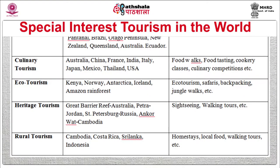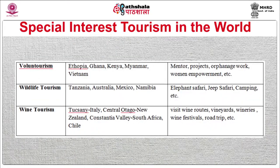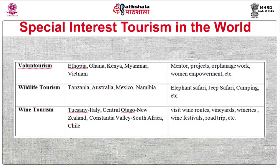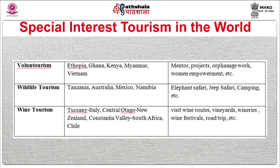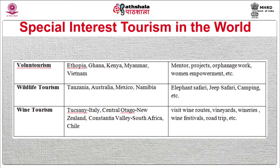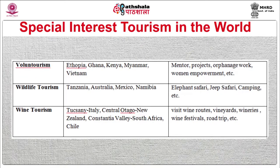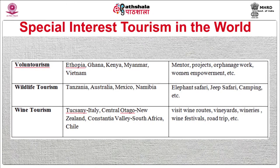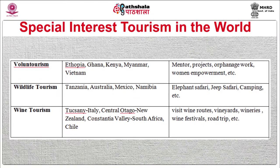For rural tourism, Cambodia, Costa Rica, Sri Lanka, Indonesia, and India are the best places. For volunteer tourism, Ethiopia, Ghana, Kenya, Myanmar, Vietnam, and India are popular destinations. For wildlife tourism, Tanzania, Australia, Mexico, and Namibia are famous destinations. For wine tourism, Italy, New Zealand, and South Africa are among the most famous countries.